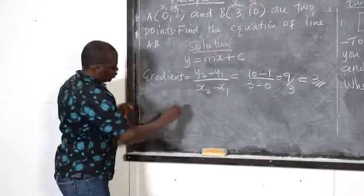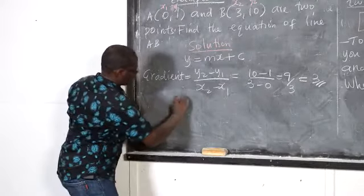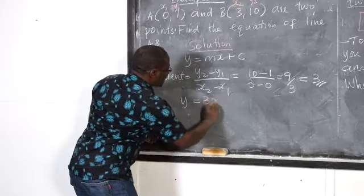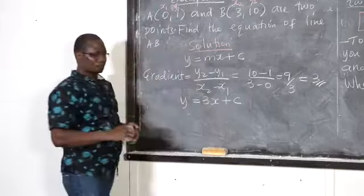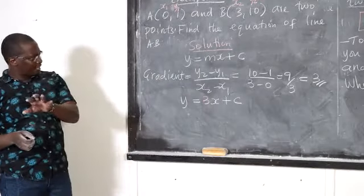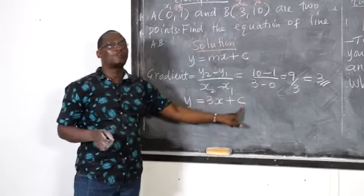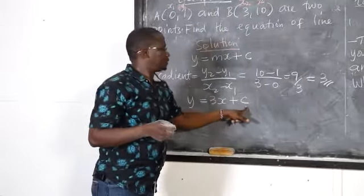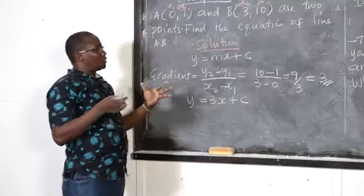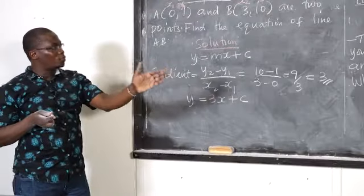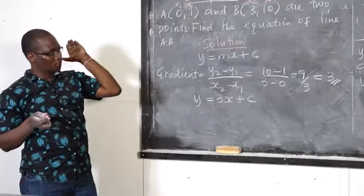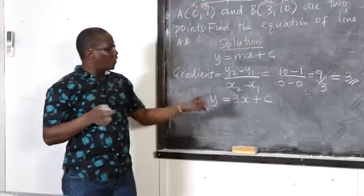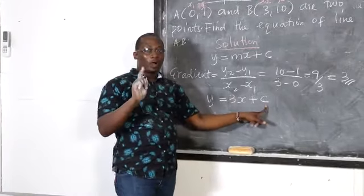The next task is how to find the value of C — where the line crosses the y-axis. Sometimes they will give you a diagram where you can see where the line crosses the y-intercept. But in this case, when you are given two points, it is up to you to find the value of C.